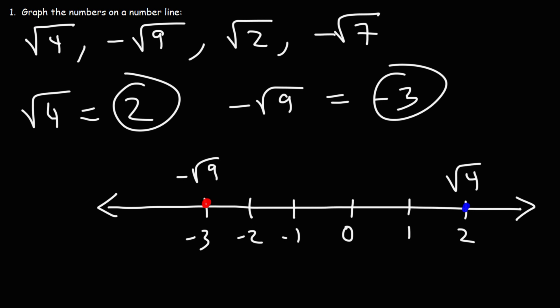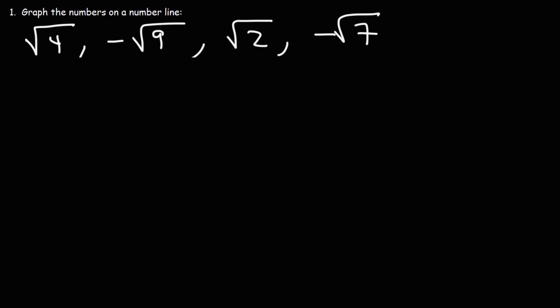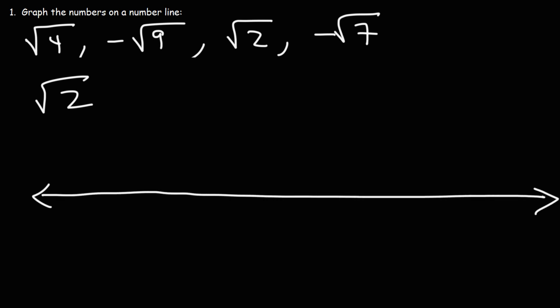Other times you can't simplify to an integer — for instance, the square root of 2 is not a nice round integer. On a test, the easiest thing to do is plug it into a calculator; you should get approximately 1.414. So between 0 and 1 and 2, the value 1.4 is just under 1.5 — so the square root of 2 is around that area.